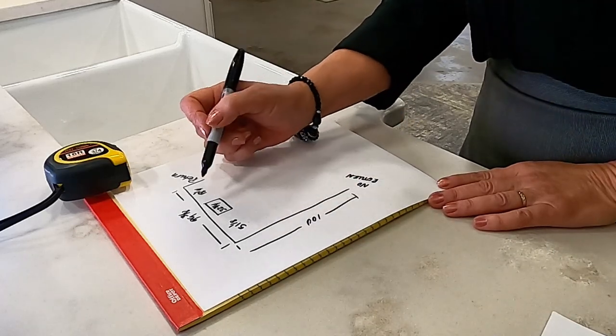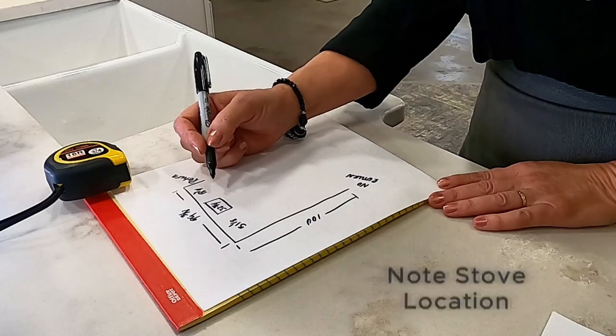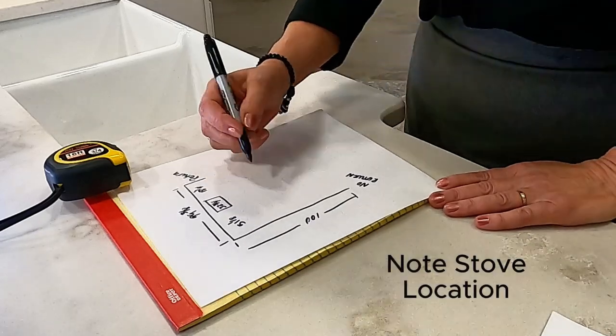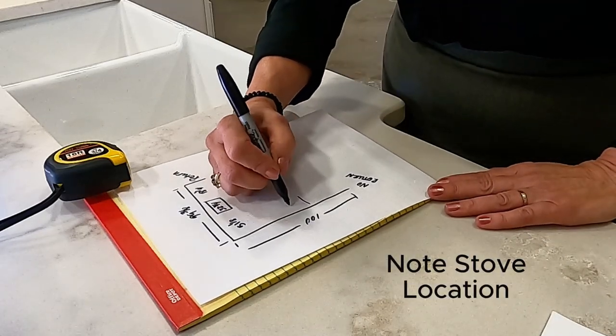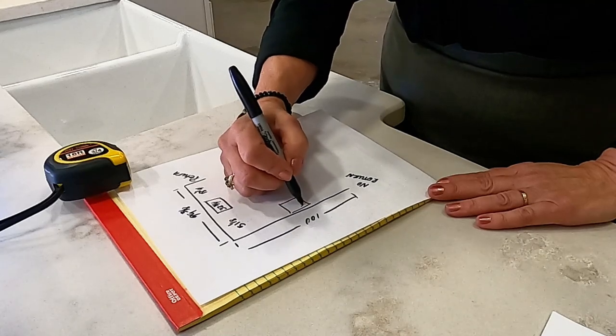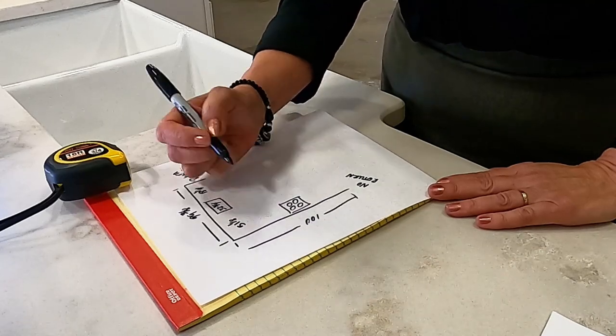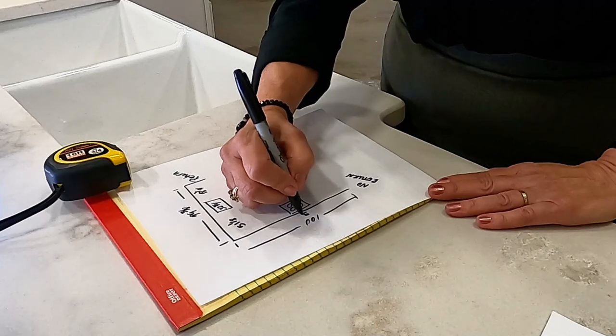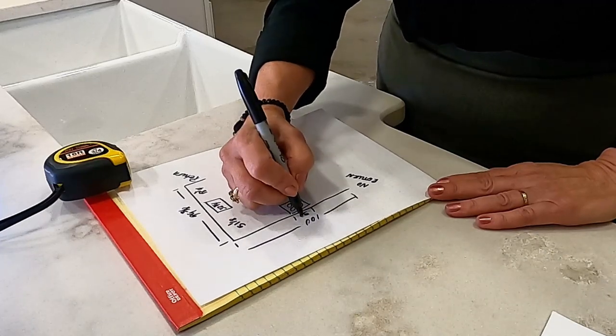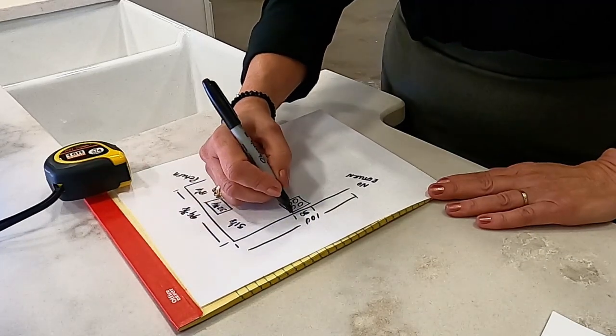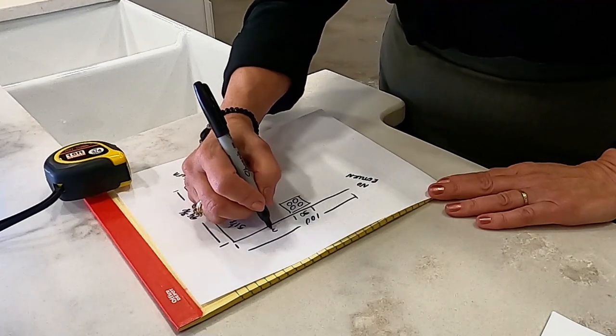Now, what we're going to be doing next is going down the wall where the stove is, just drawing the stove. Again, this is not to scale. The stove there is 30 inches, and then from the wall to the stove, what we measured was 36 and an eighth. Write that down.